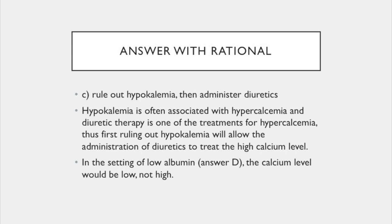Hypokalemia is often associated with hypercalcemia, and diuretic therapy is one of the treatments for increased calcium. Thus, first ruling out hypokalemia will allow for the administration of these diuretics to treat the high calcium level. In the setting of low albumin, which is answer D, the calcium level would also be low, not high.